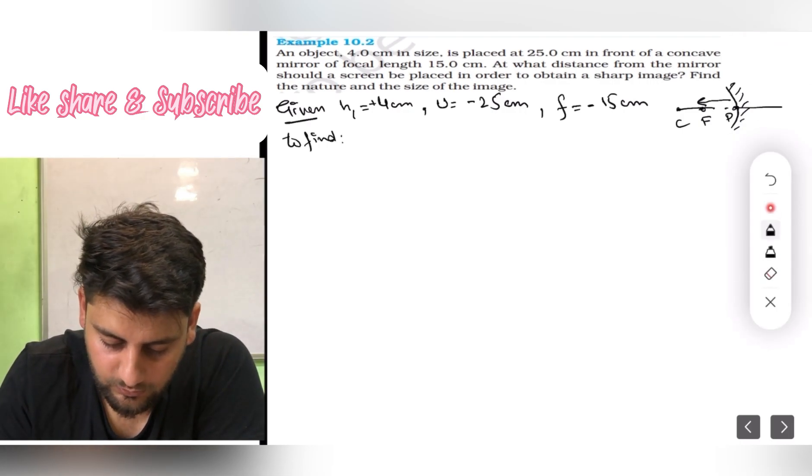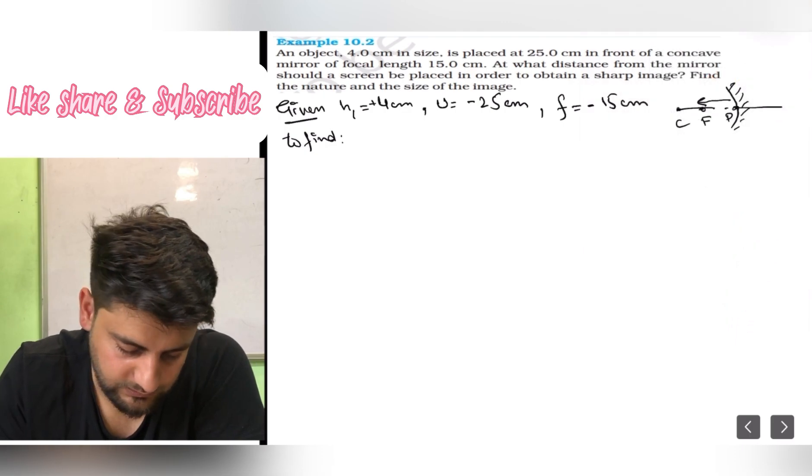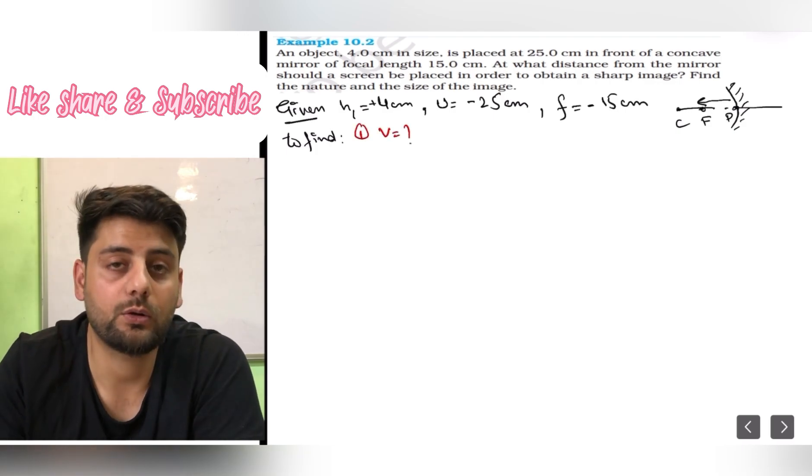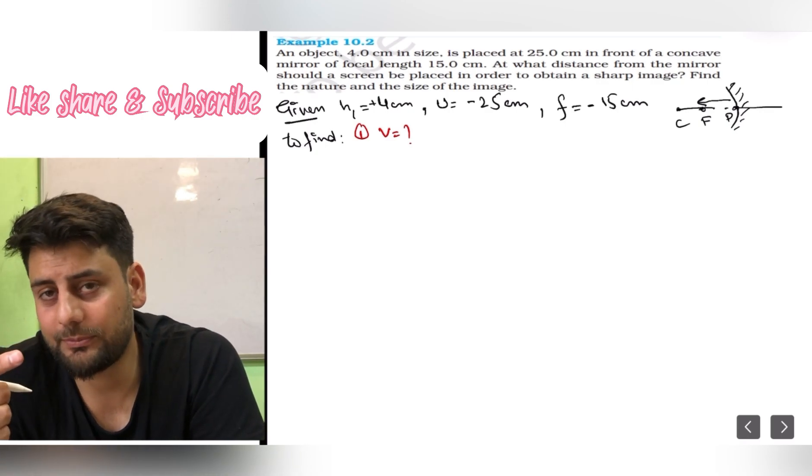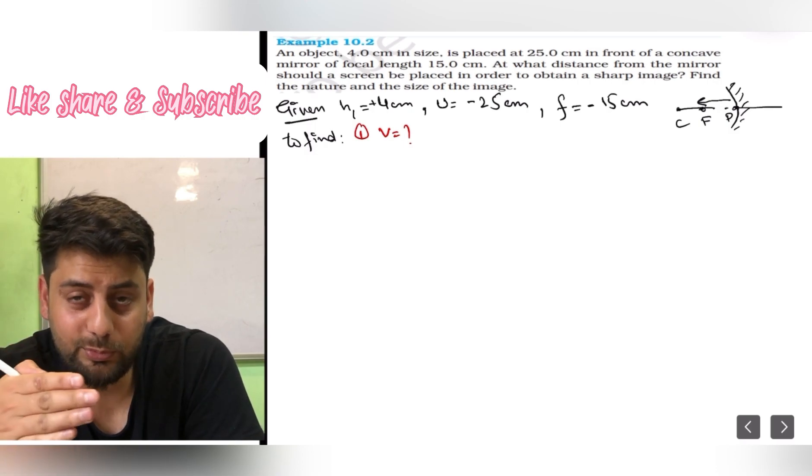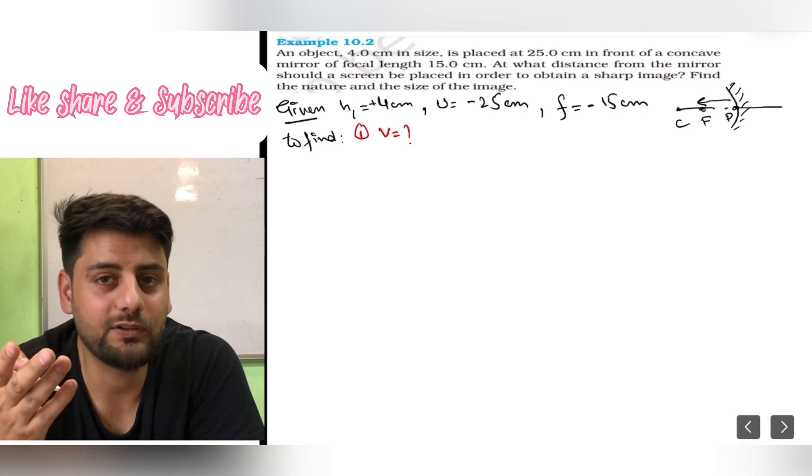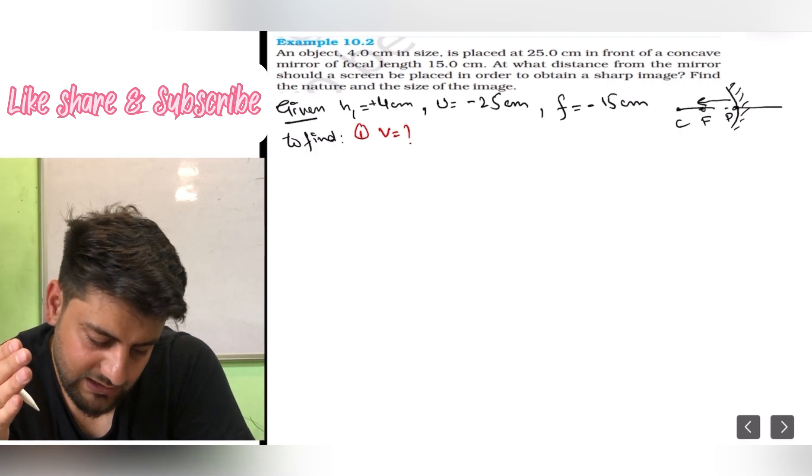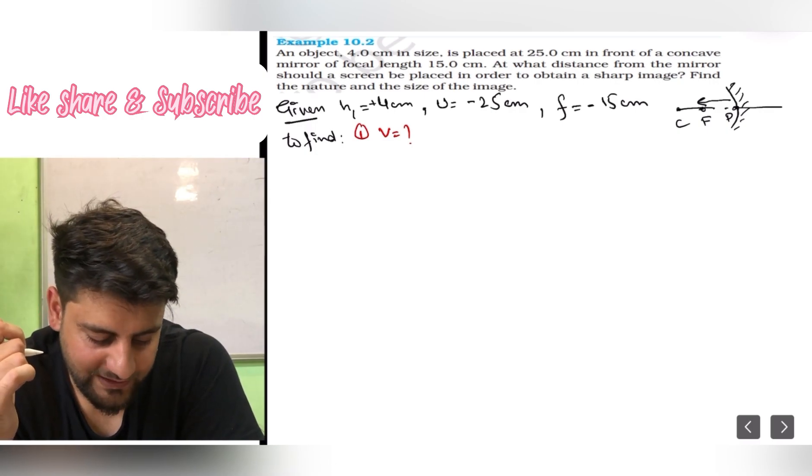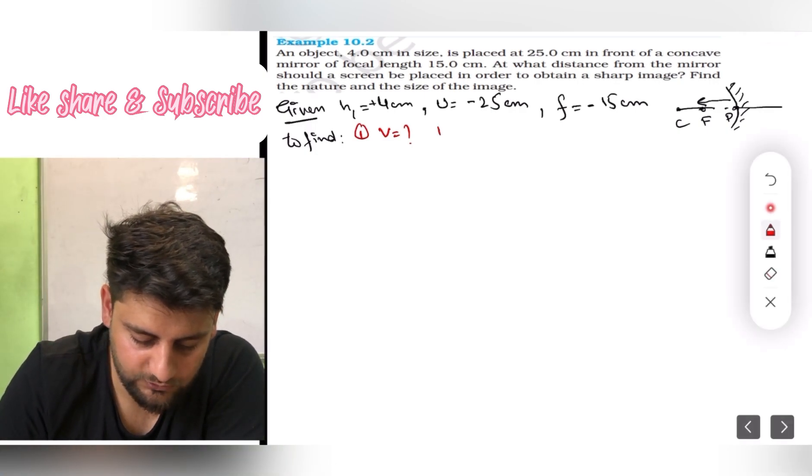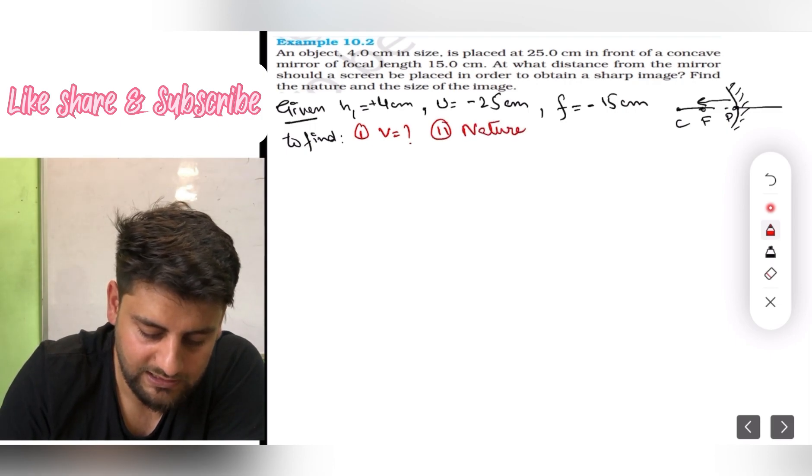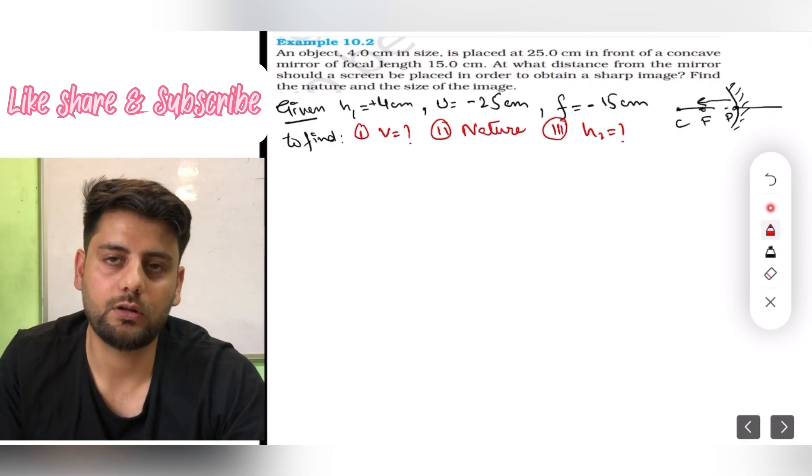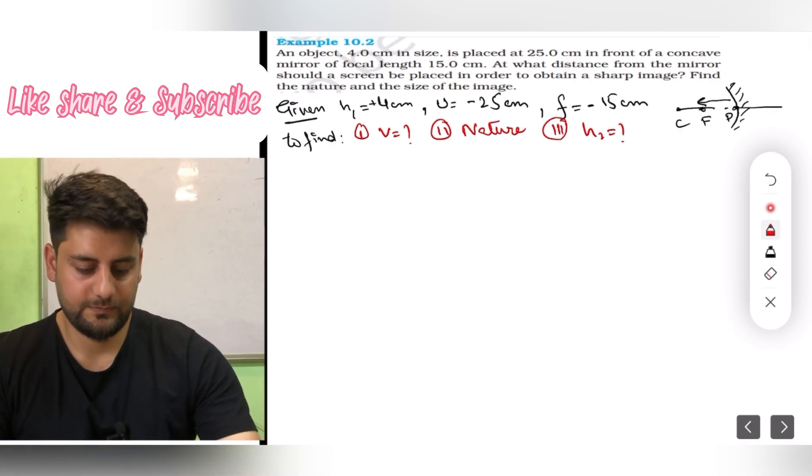Now, to find. We have to find: at what distance from the mirror should a screen be placed? That means first thing I have to find is v. Where to place the screen means where the image will form. You have to find that perfect position where you get sharp image. Basically they're asking for v. Find the nature and size of image. So second thing is nature, real or virtual. And third thing is h2. Basically it's the same question as previous one. The only difference is that was convex mirror, this is concave mirror.